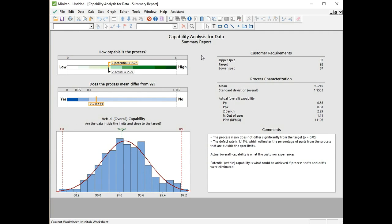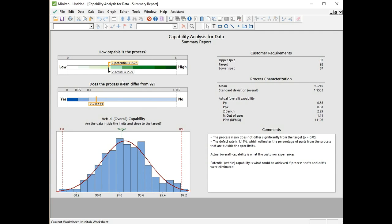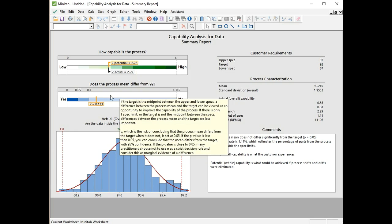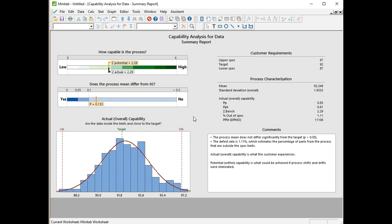And as normal we start on a summary report. So we're given a question there, how capable is the process? And we're given our Z scores. So we've got the actual and potential score, which is the overall and the within scores. Then we're asked the question, does the process mean differ from 92? So there isn't enough evidence to say that the process mean is different to 92. So we say no.